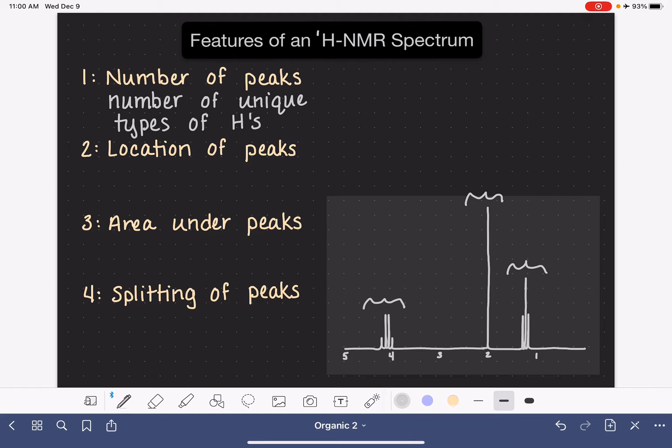The second piece of information that we get from an NMR spectrum is the actual location of these peaks along the x-axis. So are they located here versus in this position versus maybe over here or further down as well. The location of the peaks gives us information about the proximity of that particular hydrogen atom to any electronegative elements such as oxygen or halogens.